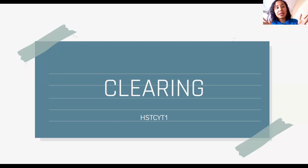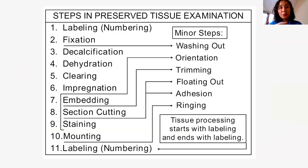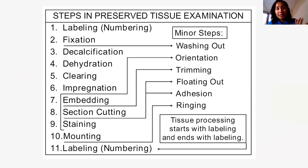So for our last topic for the first grading is clearing. Just a review: we finished fixation, where we try to preserve the morphological structure, pattern, and architecture of the tissue. As much as possible, what the cell and tissue look like inside the body should be what we see on the slide. And it is preserved by fixation.